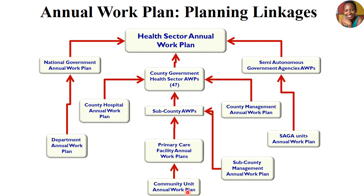The community unit is the smallest planning unit and when they plan, they report to the next level — the primary care facility level of health centers and dispensaries. The primary unit level then submits to the sub-county planning units. The sub-county submits to the county, but sub-county management teams are networked and are supposed to sit together to consolidate their work before submitting. Some counties also manage facilities from level four downwards.